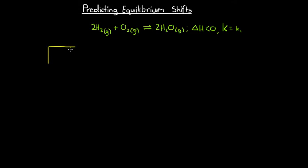Let's say I've got some samples of hydrogen, oxygen, and water, and I put them all in a box. There are three possibilities for what can happen. The first possibility is that there is a net forward reaction — a net production of water and a net reduction in the hydrogen and oxygen in the box.